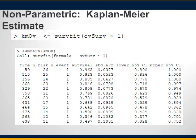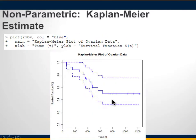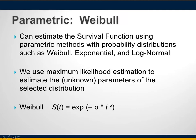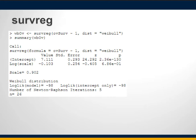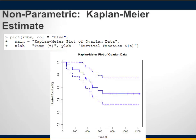There are two approaches to survival analysis: non-parametric, where you use the survfit function and plot the Kaplan-Meier curve; and parametric, where you use different distributions to get coefficients and make predictions. We are only covering the non-parametric approach in this class. The lecture slides include two additional slides on the parametric approach, but we are not going into those.